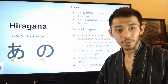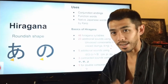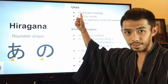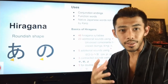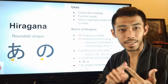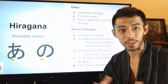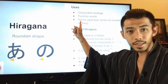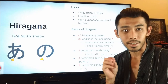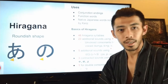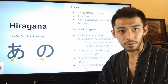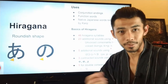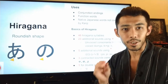So when do we use hiragana and not katakana and kanji? You use hiragana for conjunction endings — basically the ending part of a sentence like masu, desu, deshita, and so on. Also for function words and native Japanese words not covered in kanji. Sometimes things very unique to Japanese or Japanese culture have no kanji characters that can express them, so times like that we use hiragana.